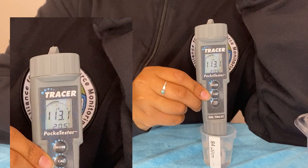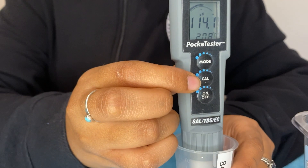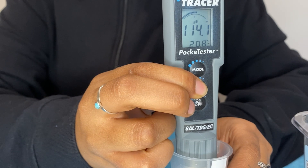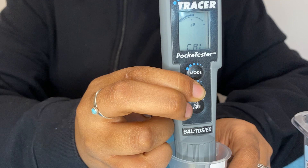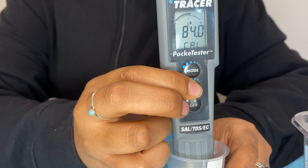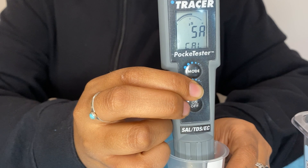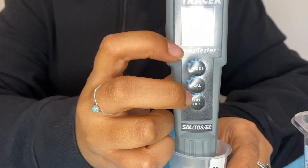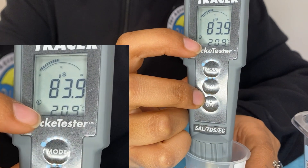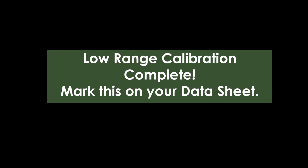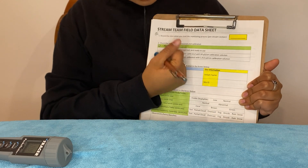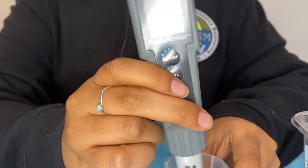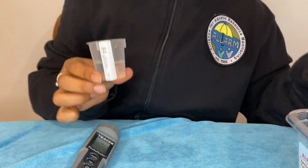Once the reading is stable, press and hold the CAL button for approximately two seconds until CAL appears on the bottom of the screen and 84 flashes. When the meter is finished calibrating, SA and END will briefly flash and return to the meter's home screen. If SA and END do not appear, your meter did not successfully calibrate and you'll have to start from the beginning. Once your meter is calibrated, you will notice a small L in a circle at the bottom of your screen, meaning your meter was successfully calibrated for the low range or 84 microsiemens per centimeter standard solution.